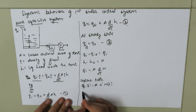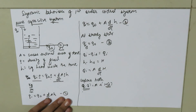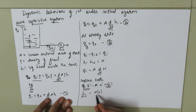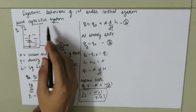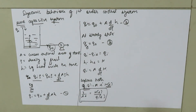The transfer function is always the Laplace transform of the output deviation variable divided by the Laplace transform of the input deviation variable. So the transfer function H(s)/Qi(s) equals 1/(A·s). This is the transfer function for the pure capacitive system. Thank you.